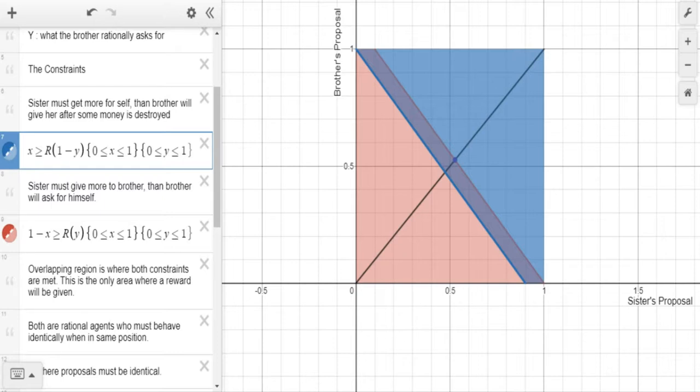So the blue area is kind of the area where sister will take the deal. But then we also have the area where brother will take the deal. Sister must give more to brother than brother will ask for himself. So 1-x is what sister gives to brother. Brother will ask for himself r times y, the remaining money times what he is asking for. And this is the solution that must get brother to concede. Now what we observe right here is that there is an intersection between red and blue. This is where both people will agree to the split.